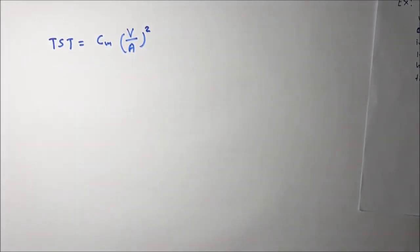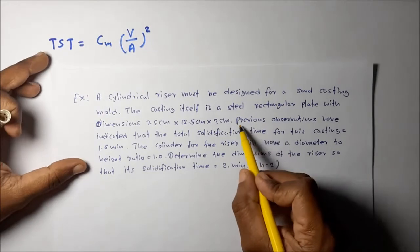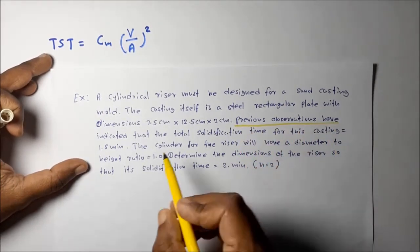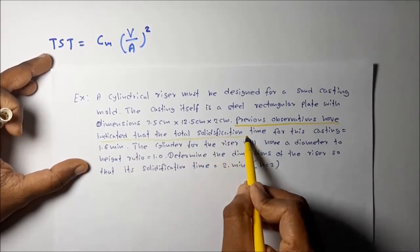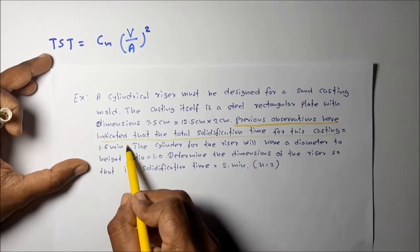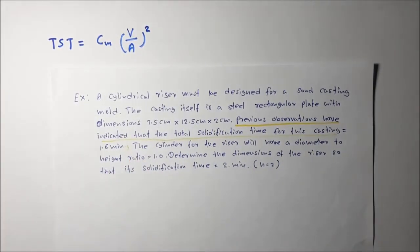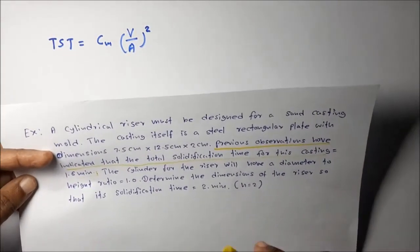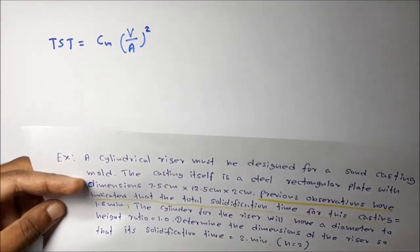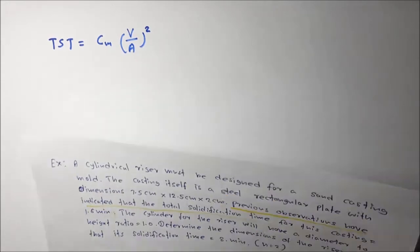In this problem, one data point is given. Previous observations have indicated that the total solidification time for this casting is 1.6 minutes. This data is given to calculate the Cm mold constant. So first we are going to calculate the Cm mold constant, then we can design the riser according to the given data.